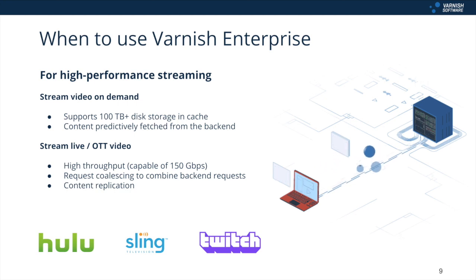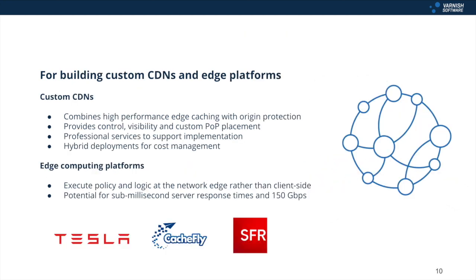Some of the use cases it enables include building customized private and hybrid CDNs by combining high-performance edge caching nodes with origin protection and edge logic — giving you control, visibility, and the ability to place points of presence based on unique needs rather than the generalized needs of a commercial CDN's customer base. The professional services it comes with are a crucial aspect for supporting the optimal configuration of components, and there's an array of features for routing traffic, load balancing, and maintaining high speed.